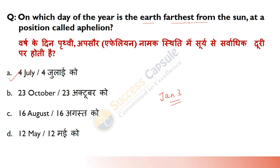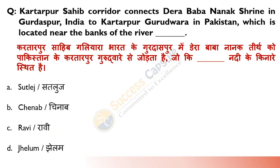Kartarpur Sahib Corridor connects Dera Baba Nanak Shrine in Gurdaspur, India to Kartarpur Gurdwara in Pakistan. It is located near the banks of which river? Answer is C — Ravi. This Kartarpur Gurdwara is famous for Guru Nanak Dev Ji, the first Sikh Guru, who spent the last 18 years of his life there. This corridor was completed for the 550th birth anniversary of Guru Nanak in 2019.